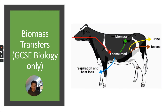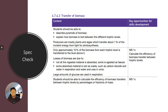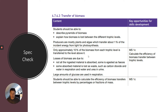This video is about biomass transfers. This is part of the ecology unit and it's for GCSE biology students only, and it follows on from my previous video on pyramids of biomass and trophic levels. Let's do a quick spec check: transfer of biomass. You should be able to describe pyramids of biomass, but we now need to explain how biomass is lost between the different trophic levels, talk about producers, and discuss where losses of biomass might be. You also need to calculate the efficiency of biomass transfer between trophic levels — if you're doing higher tier biology, that will definitely come up.